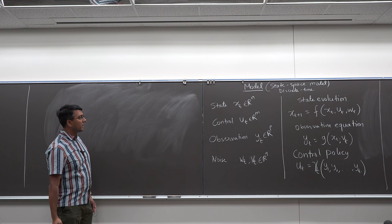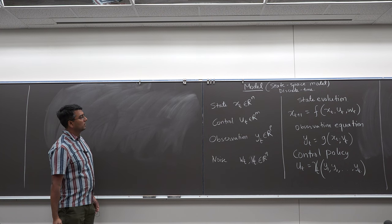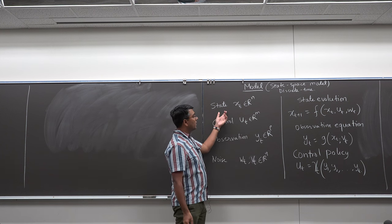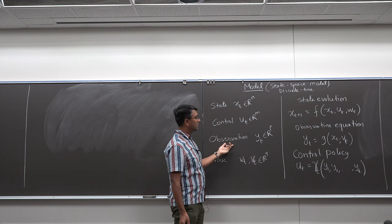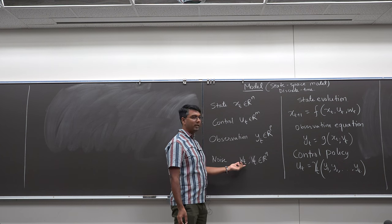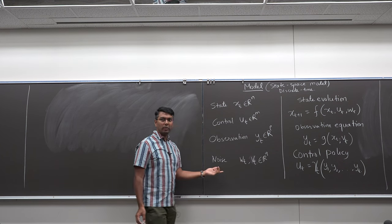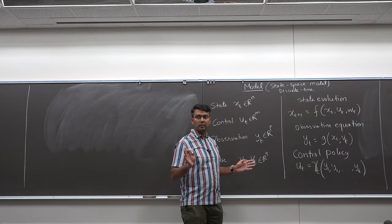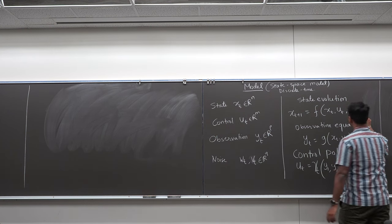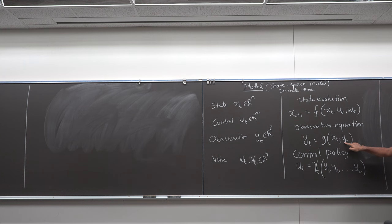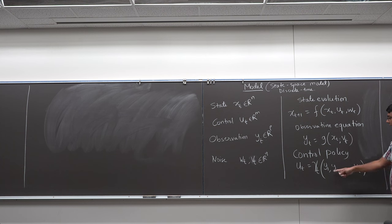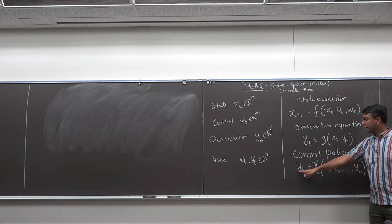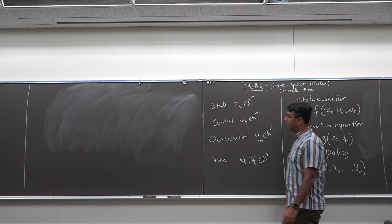Let's unpack what these terms mean. Every system has a state, some control inputs, and observations. You might have noise — most real systems do, though sometimes it's so small you can ignore it. The state evolves over time. The observation is a function of state and sensor noise. The control policy takes the sequence of observations and figures out how to act at the current time step.